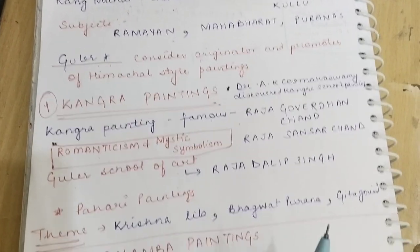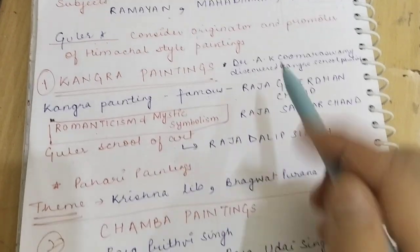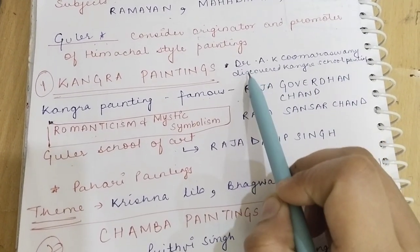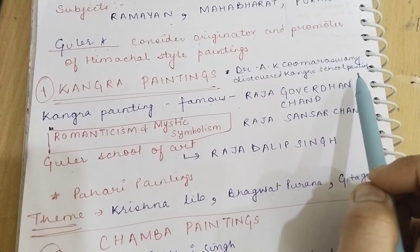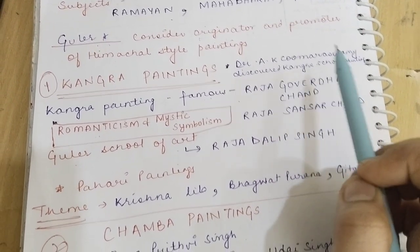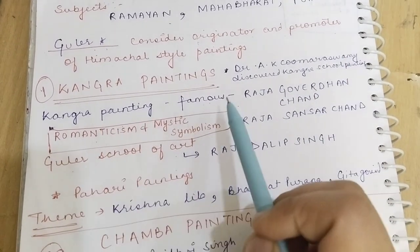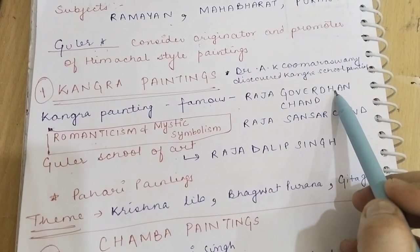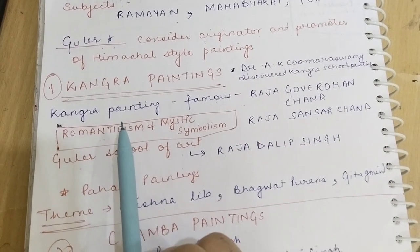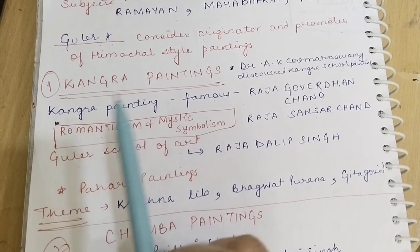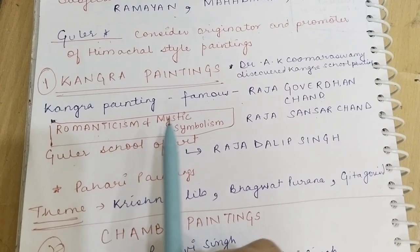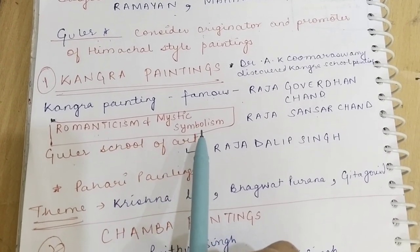Now we will talk about Kangra painting. Dr. A.K. Coomaraswami was the one who discovered the Kangra school of painting. Kangra painting was very famous in the time of Raja Gowardhan and Raja Sansar Chand. Kangra painting and Guler painting had the theme of Romanticism and Mystic Symbolism.